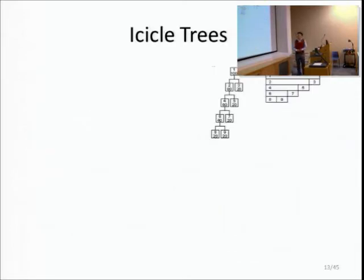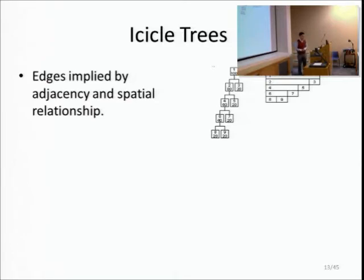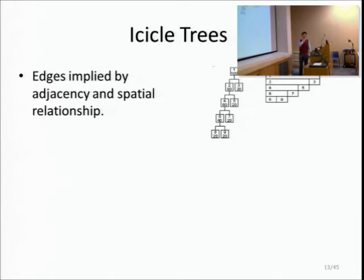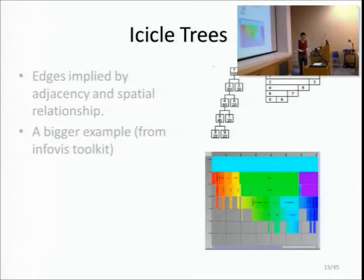The icicle tree is another approach where edges between nodes are implied by adjacent spatial relationships. Looking at the tree example: the root is the bar on top marked as number one, it has two children - nodes 2 and 3 - directly below it. The children of node 2 are directly below it within the same width, and it goes on. Color is also used here to show depth differences between branches.